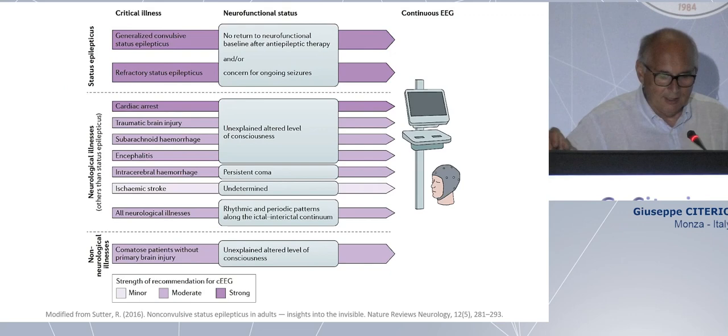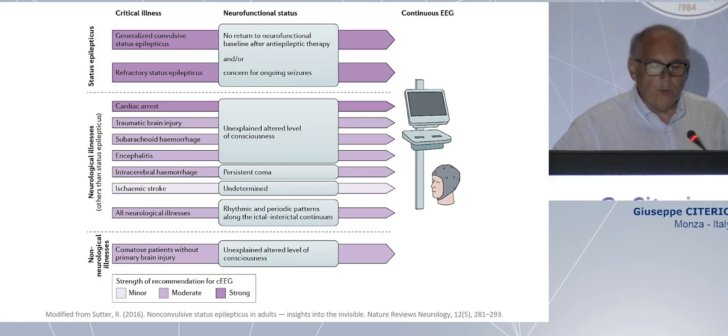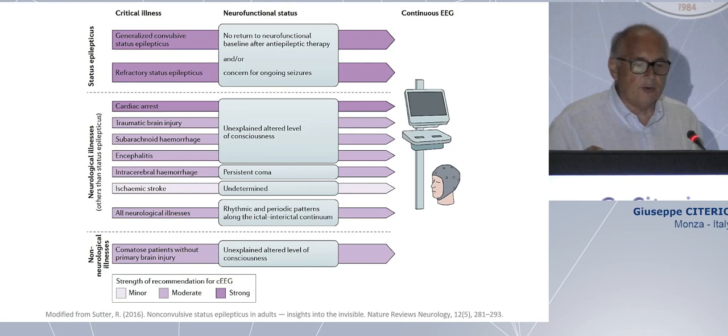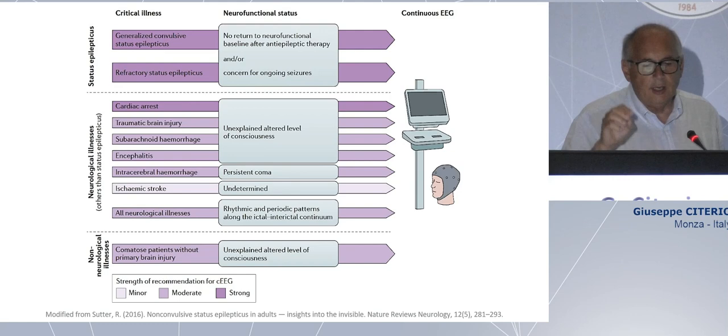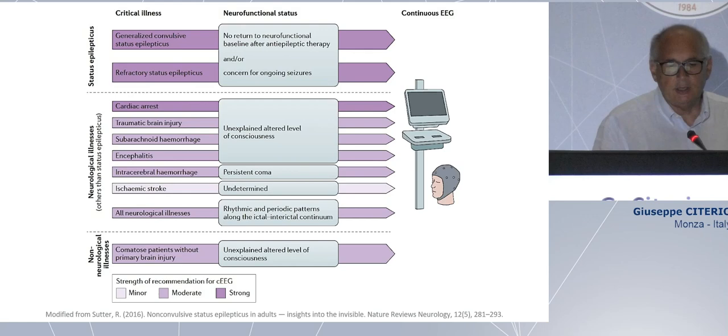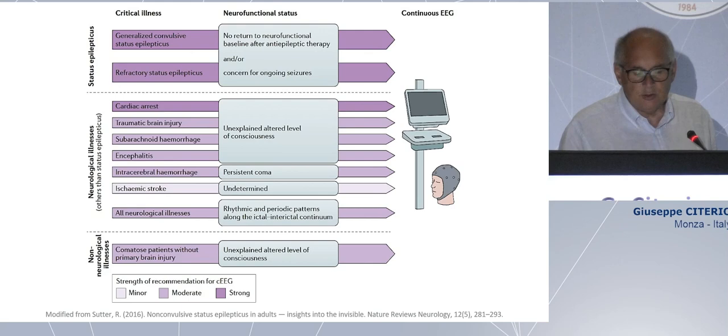Generally speaking in this setting, we can say that refractory status, convulsive status epilepticus, for sure, are indications for recording EEG. But there are some other settings, like cardiac arrest, traumatic brain injury, in which the patient could have an unexplained condition not explained by the CT scan. The patient is in coma. The CT scan is not so severe for having the patient in coma. So probably you need to think about some electrical problem in this patient. In traumatic brain injury, this could happen very frequently.